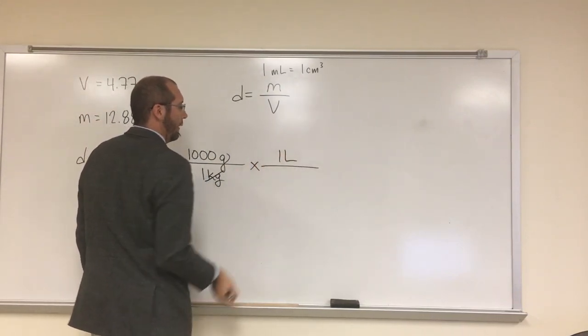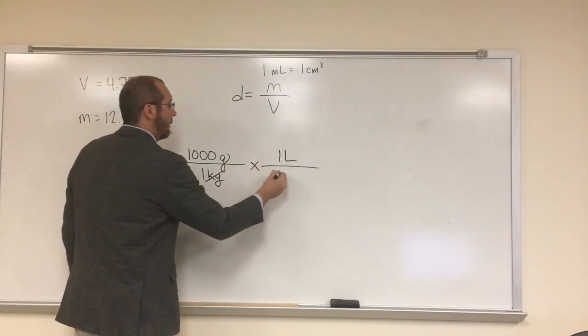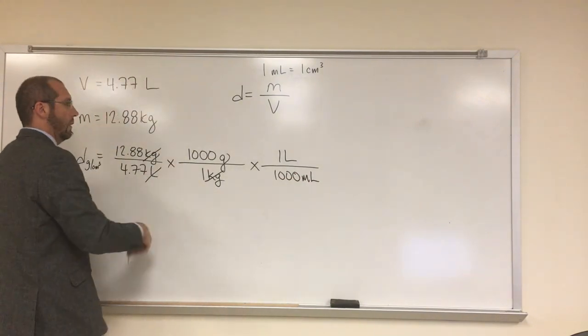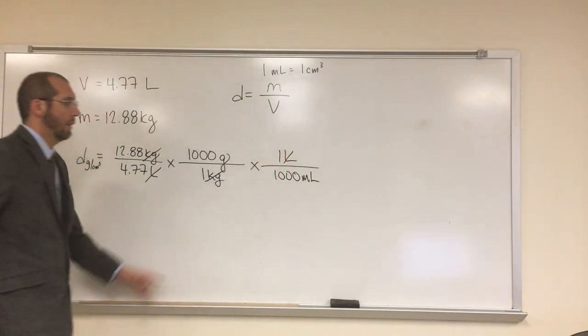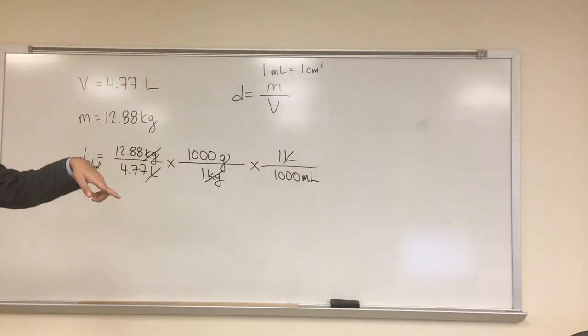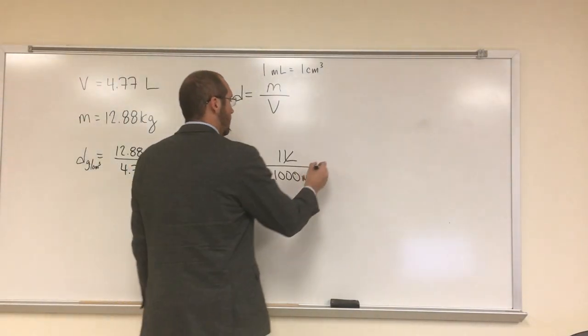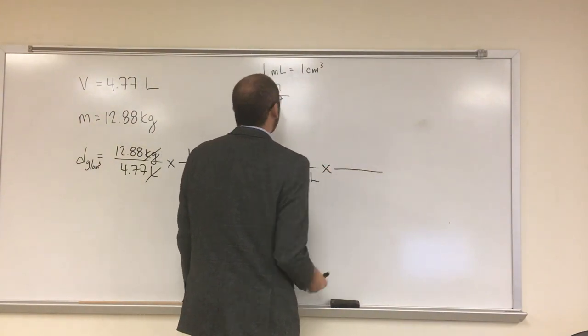One liter at the top, so we can cancel that out. And one thousand milliliters at the bottom. So, cancel, cancel. And that's grams per mil, right? Even though it would be the same number, it's not the same units. So, we're going to do one more unit conversion.